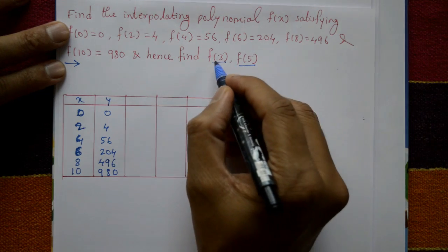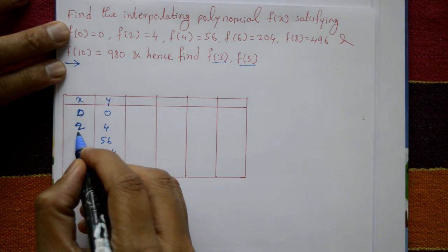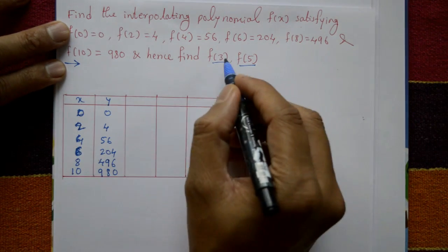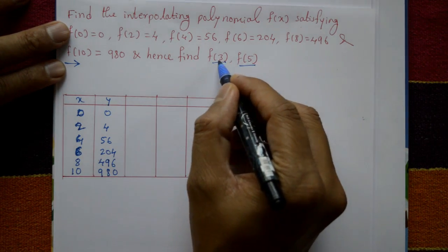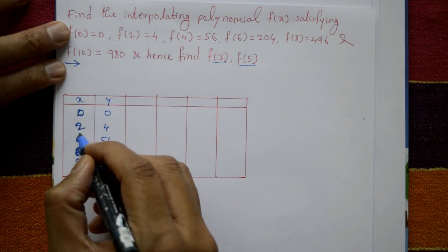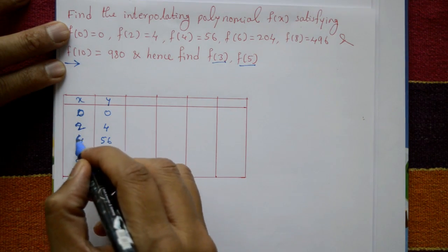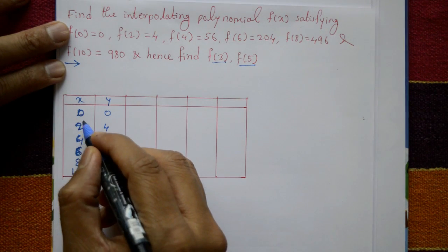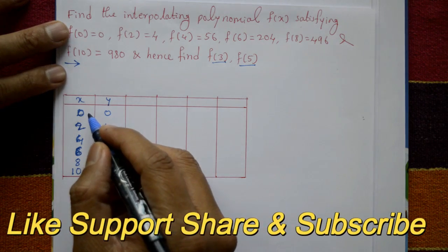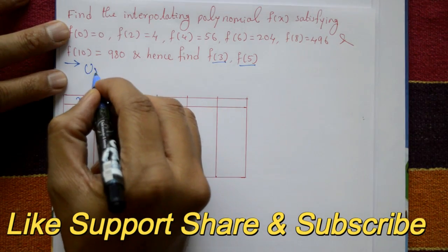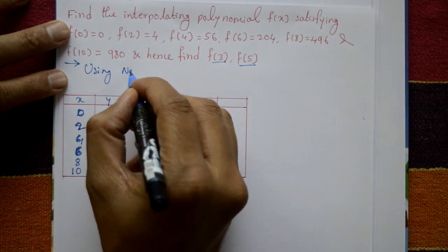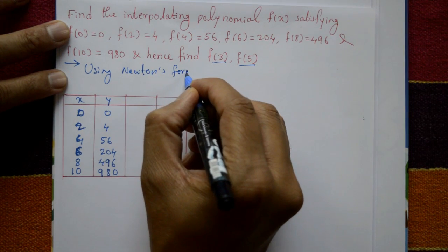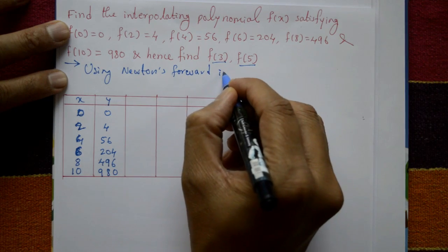Now find f(3) and f(5). f(3) is near the first half, and f(5) is at the exact middle. Since 3 and 5 are in the first half — close to 0 — we use Newton's forward interpolation formula.